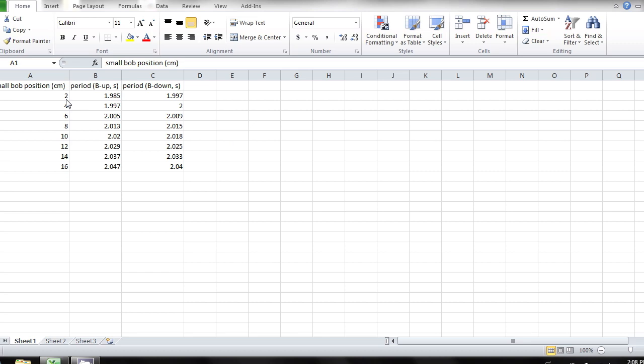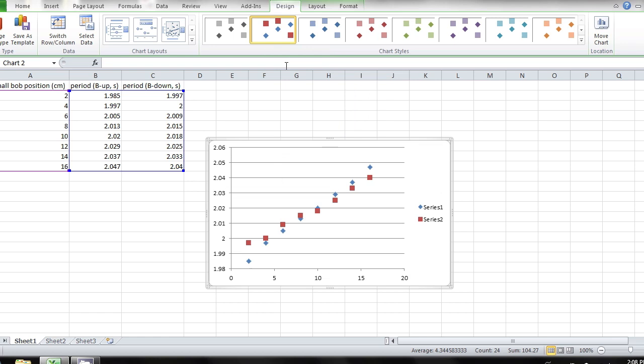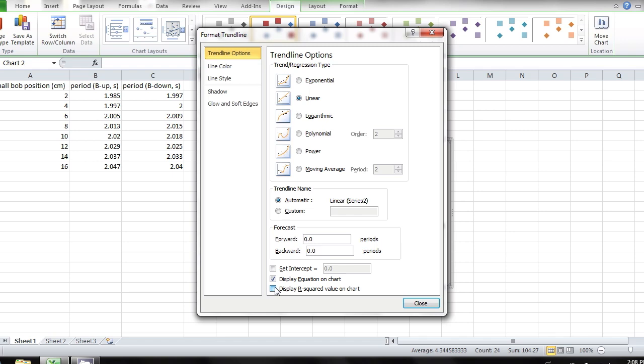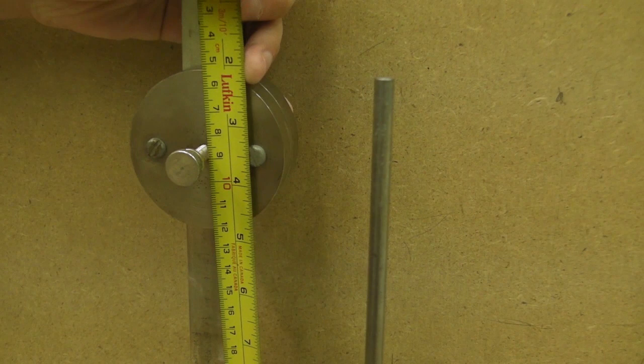At this point in the lab you will wish to graph your data as you need a value from the graph to continue. Plot the period in the up orientation and the period in the down orientation as functions of the small bob position. Add trend lines for each trace. The intersection of the two lines will determine the equal period point around which you will collect finer grained data.